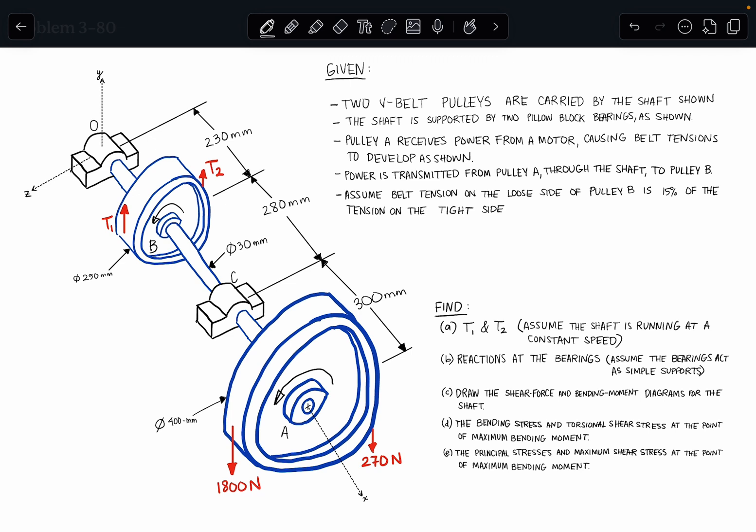Next, we assume that the belt tension on the loose side of pulley B is 15% of the tension on the tight side. Well, looking at the direction of the rotation of pulley B, we can already see that T1 is going to be the higher tension, right, because we're going to be pulling down on that side, and T2 is going to be the lighter tension side.